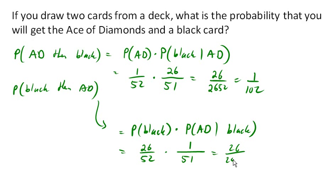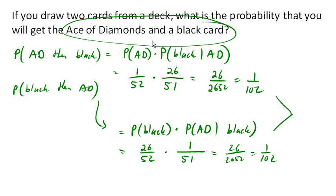So in both cases the probability is 1 out of 102. These are two different ways that the same result could happen, so we need to add these together. The total probability of getting an ace of diamonds and a black card is the sum of those: 2 out of 102, or 1 out of 51.